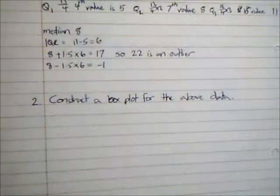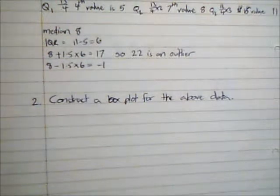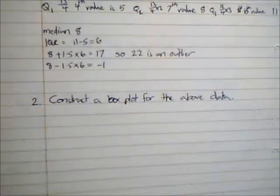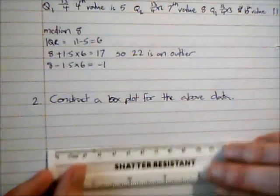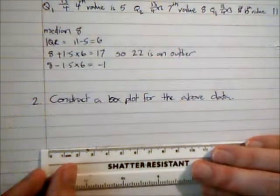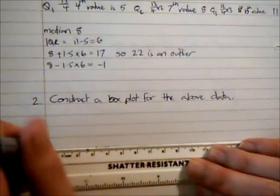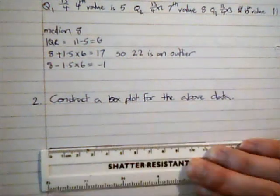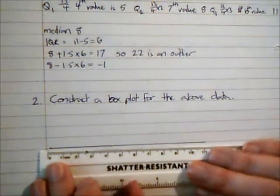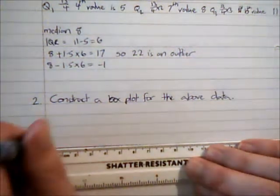So how do I construct a box plot for this? Well, I'm going to need a scale. I need to go at least as high up as 22. Now, this type of paper isn't ideal for doing a scale on. You're likely to have a section of graph paper available to use in the exam.